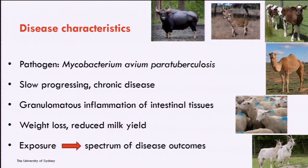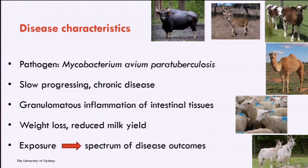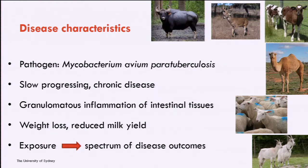The disease impact is reduced production, so weight loss and reduced milk yield. We know that not all exposed animals will get infection, and there are varying degrees of susceptibility or varying degrees of disease states in these animals, both in sheep and in cattle.